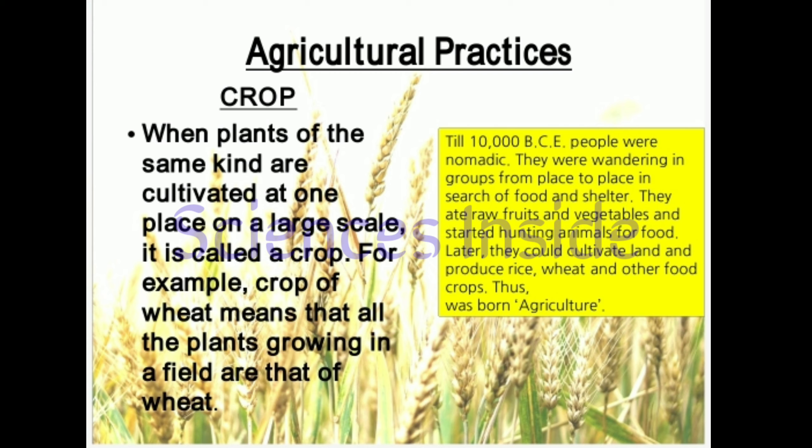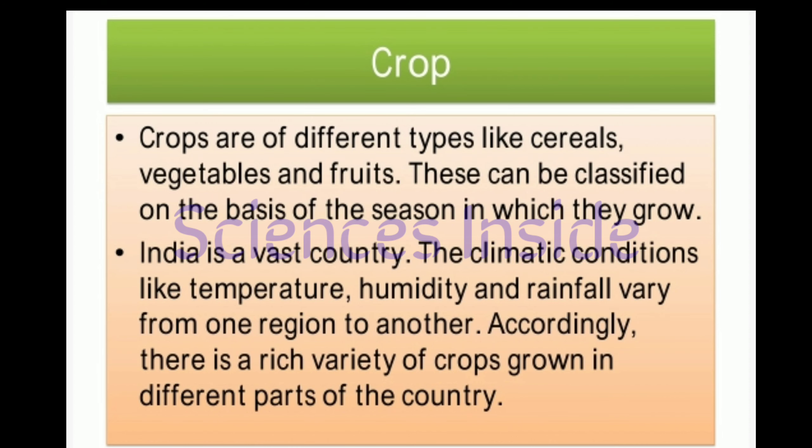A crop grown for the purpose of food is called a food crop — for example, wheat and paddy. A crop grown for the purpose of sale, profit, and non-subsistence is called a cash crop — for example, tea and coconut. Crops are of different types like cereals, vegetables, and fruits.